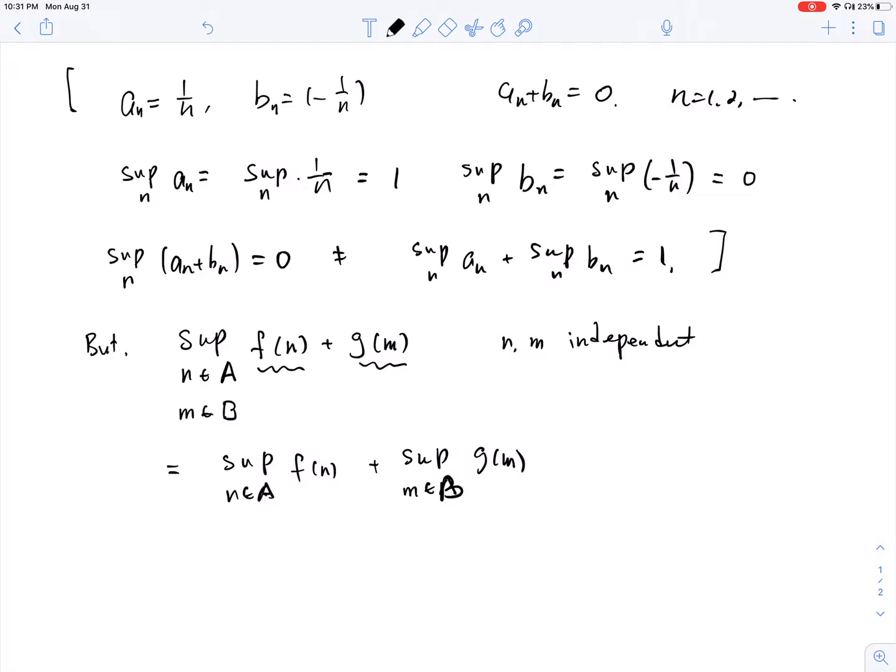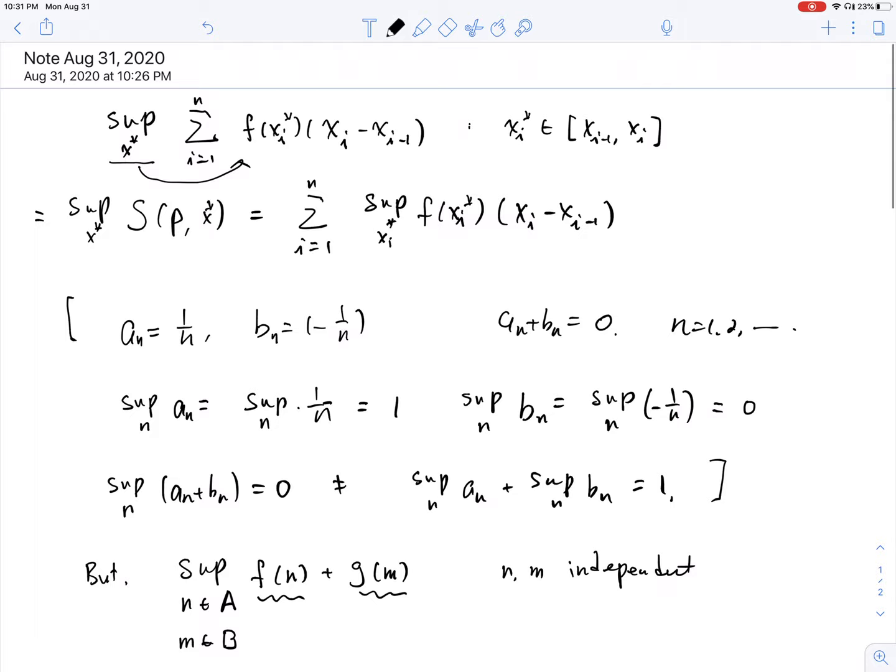Because if we look back, when we take xi star inside [xi, xi minus 1], for each i, we take this xi star over here independent of other choices. So that's why we can do that.